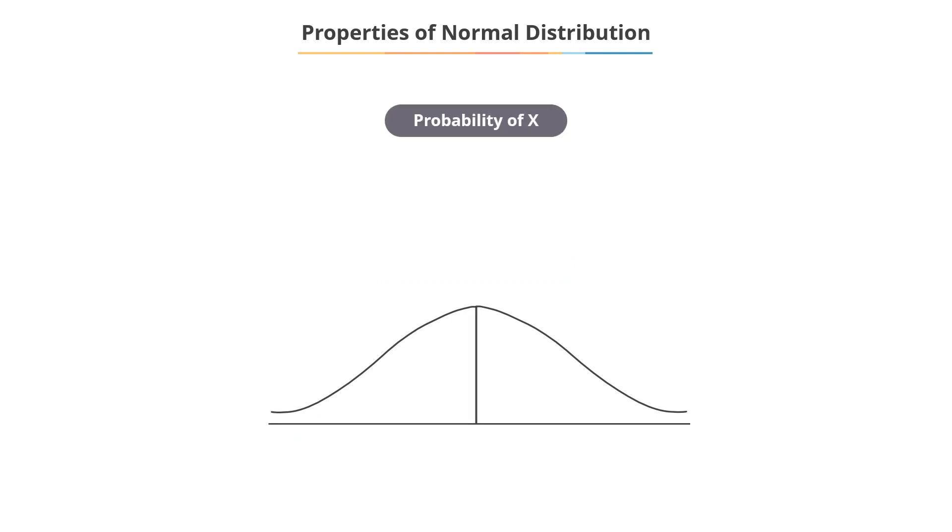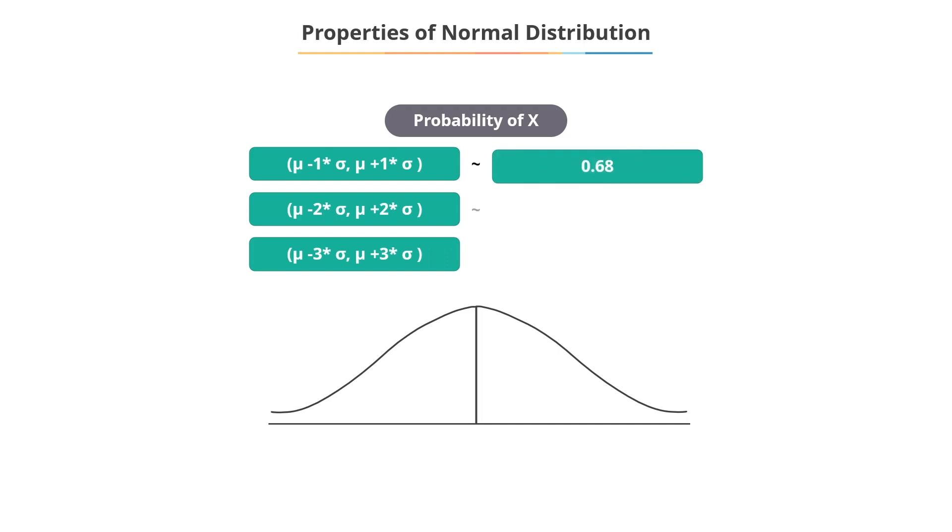The probability of x lying in mu minus 1 multiplied by sigma, mu plus 1 multiplied by sigma, mu minus 2 multiplied by sigma, mu plus 2 multiplied by sigma, and mu minus 3 multiplied by sigma, mu plus 3 multiplied by sigma, is 0.68, 0.95, and 0.997, respectively.